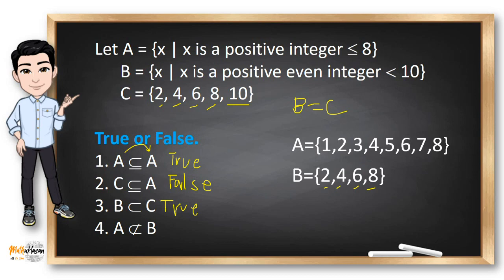How about the last item? A is not a proper subset of B. A has these elements and B has these elements. It's obvious that not all elements of A are in B — B has no 1, while A has element 1. So therefore, A is not really a proper subset of B. Therefore, this is true.